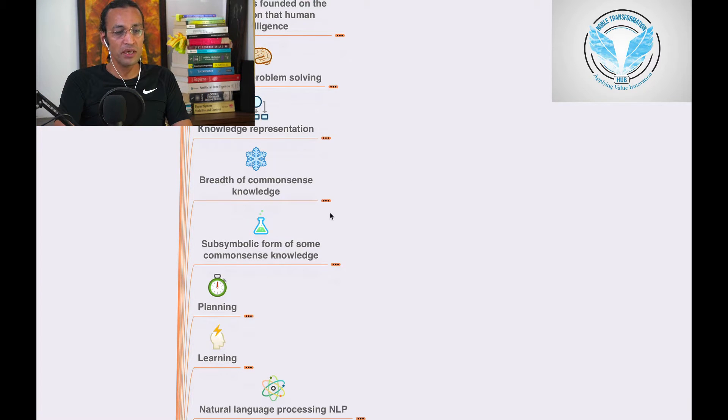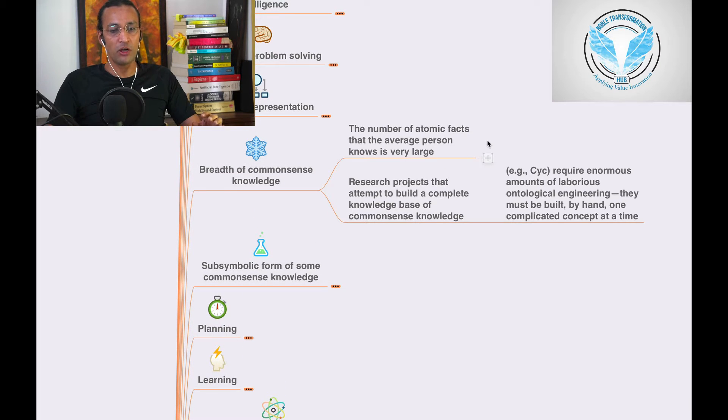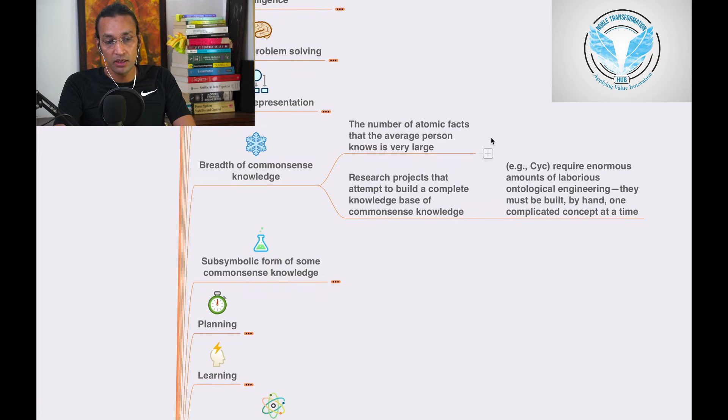We'll go to the concept of breadth of common sense knowledge. The number of atomic facts that the average person knows is very large. What it means? It means the number of atomic facts that the average person knows is very large.